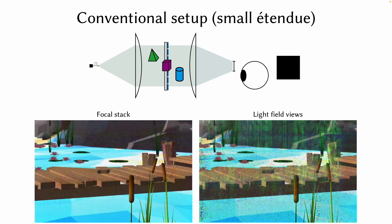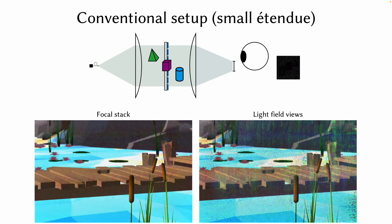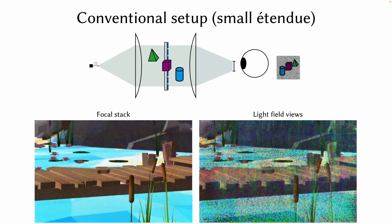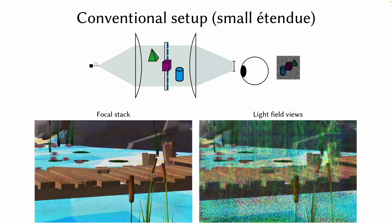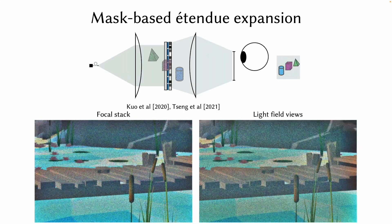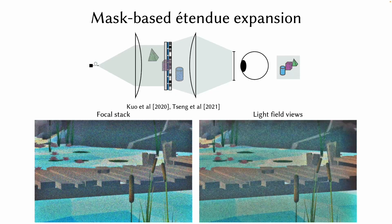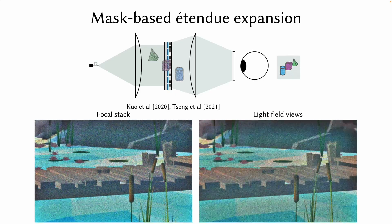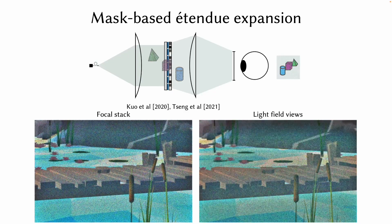To cope with this issue, several types of methods have been developed to expand the system etendue without necessitating a higher resolution SLM. The first type of approach expands the etendue by inserting a static diffractive mask at a higher resolution into the optical path. The smaller pixel pitch diffracts the light to a wider angle, resulting in a bigger eyebox. However, the use of the diffractive mask reduces the overall contrast of the images and leads to more speckles, as the static pattern is not optimized against the content.